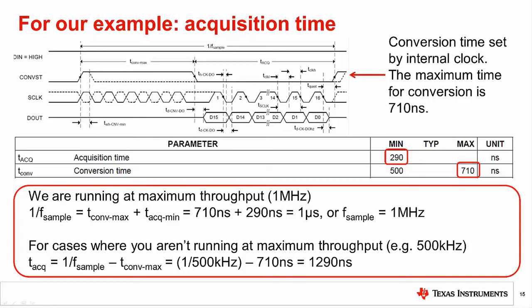This is because the conversion timing for this example is set by an internal clock. Once the conversion is complete, acquisition will start. Therefore, to find the acquisition time, you subtract the maximum conversion time from the total throughput time. Note that this is true for most devices, but for some devices the conversion may be controlled by other means, so be careful to read through the datasheet and pay close attention to the timing diagrams. Finally, it should be mentioned that increasing the acquisition time will reduce the bandwidth requirement of the amplifier driver, because we have a longer time period where the internal capacitor is charging so a slower amplifier can be used. Also, increasing the acquisition time will reduce the total power, since little to no power is consumed during acquisition.